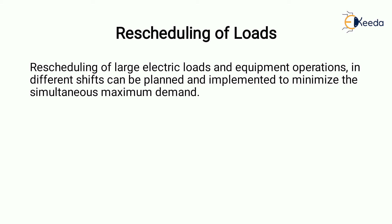Next is rescheduling of loads. Rescheduling of larger electrical loads and equipment operation in different shifts can be planned and implemented to minimize the simultaneous maximum demand. For this, we need to prepare an operational flow chart and a process chart so that it can be analyzed. After analyzing, it would be possible to reschedule the operation and running of equipment in such a way that it improves the load factor, which in turn will reduce the maximum demand.